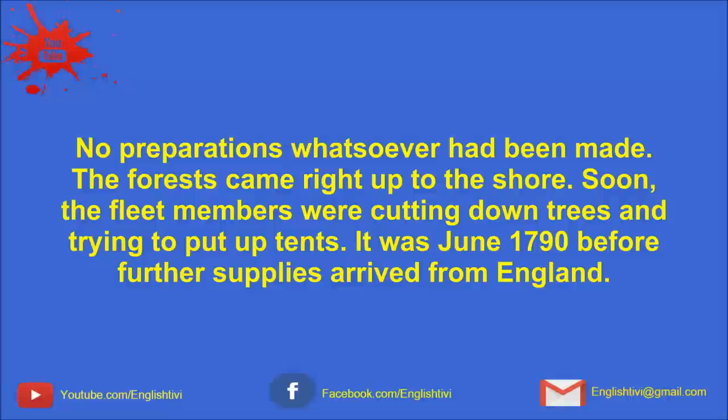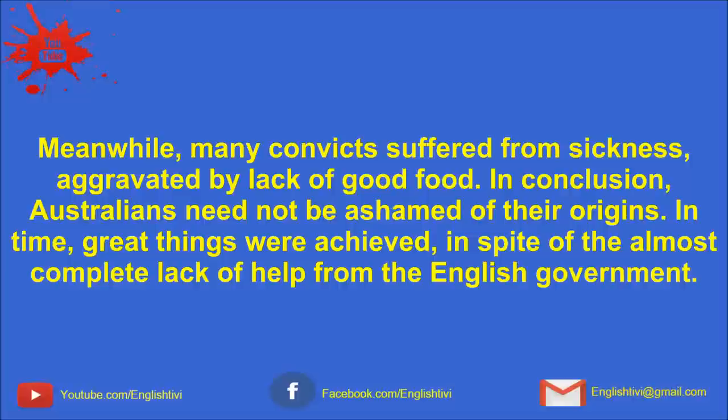No preparations whatsoever had been made. The forest came right up to the shore. Soon the fleet members were cutting down trees and trying to put up tents. It was June 1790 before further supplies arrived from England. Meanwhile, many convicts suffered from sickness, aggravated by the lack of good food. In conclusion, Australians need not be ashamed of their origins. In time, great things were achieved, in spite of the almost complete lack of help from the English government.